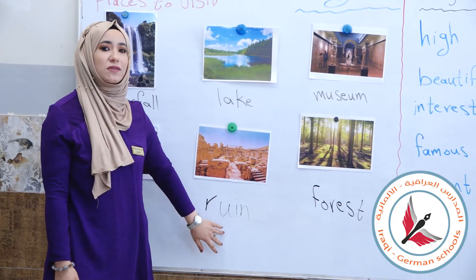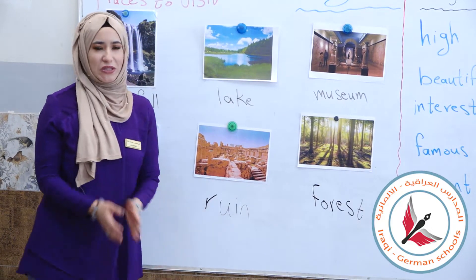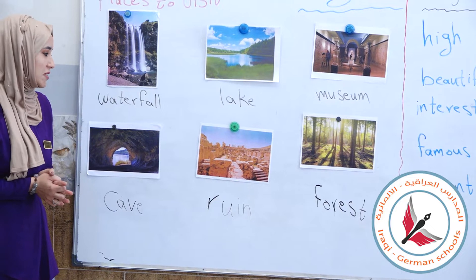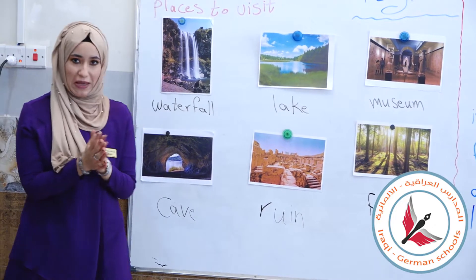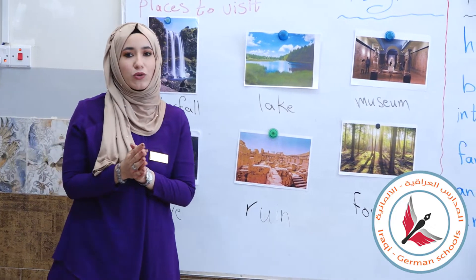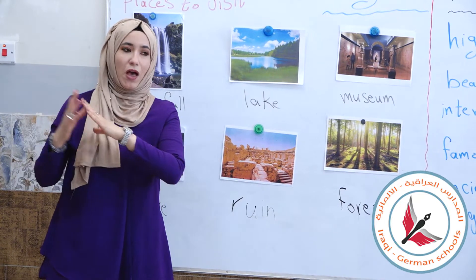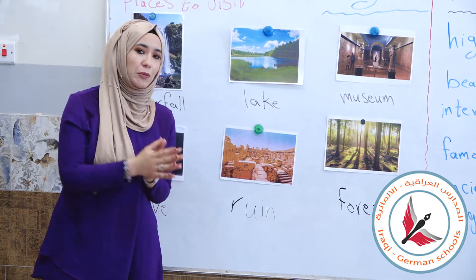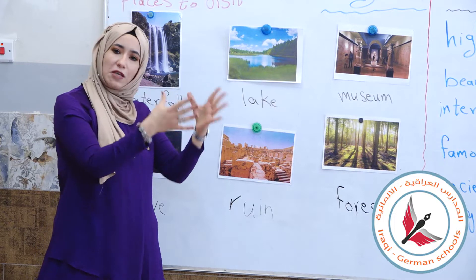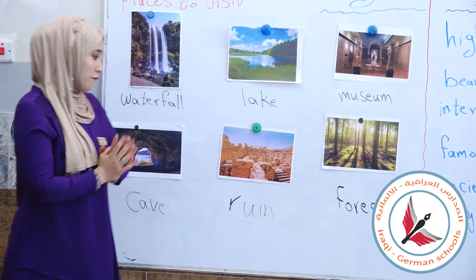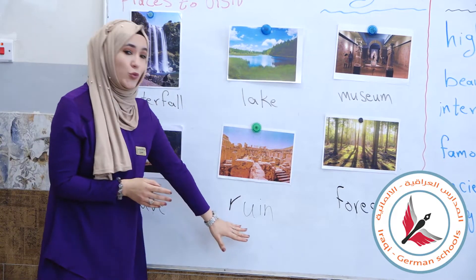Here we have ruin. What does ruin mean? Ruin means an old place — it could be an ancient site where ruins still exist, or the place itself is still standing. It's something old and archaeological. Ruin.